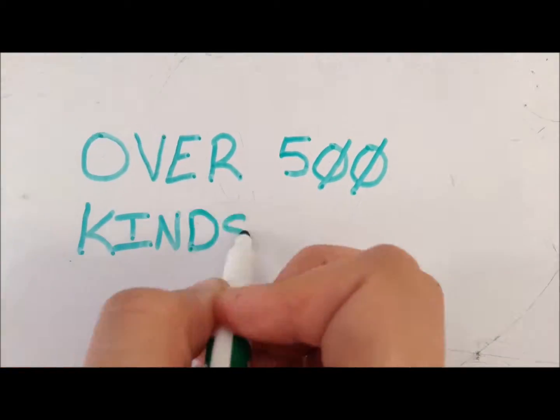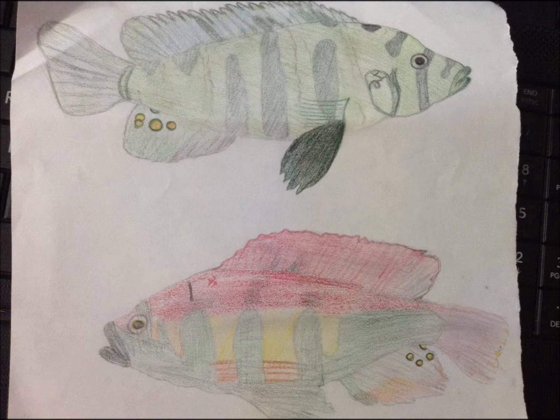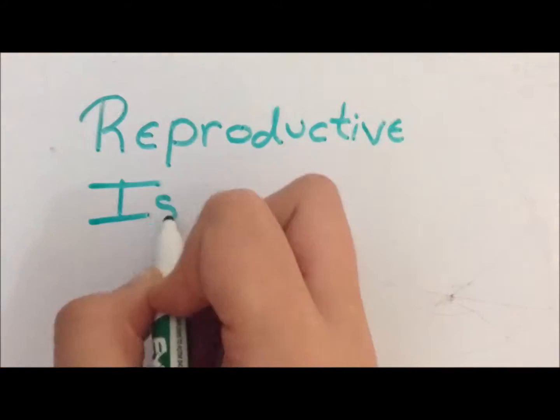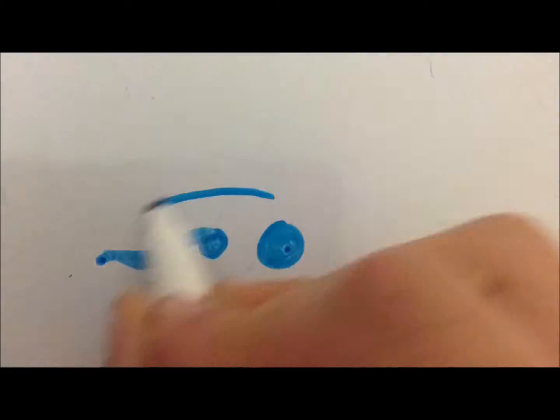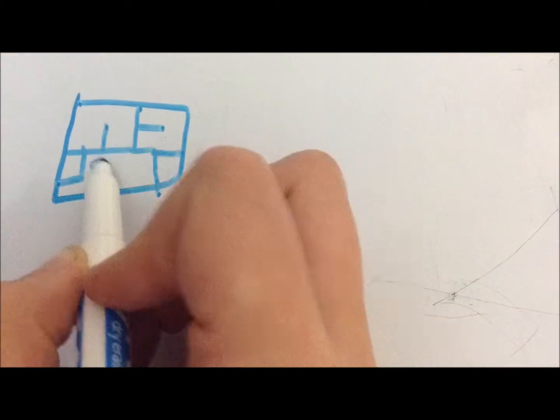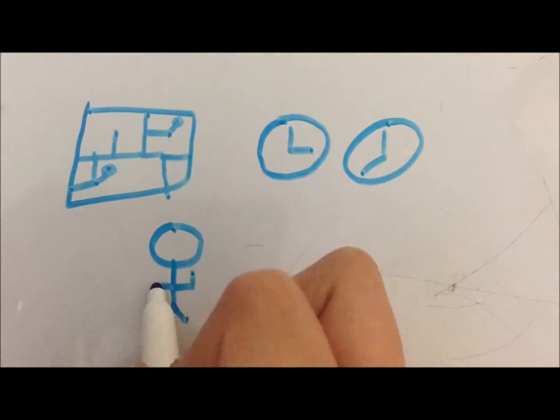This is why there's over 500 kinds of cichlids in Lake Victoria. The one on the top is one from the blue, the one on the bottom is one from more towards the red. Another cause is reproductive isolation, this is from sterility, differences in mating locations, times, or rituals.